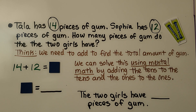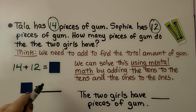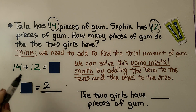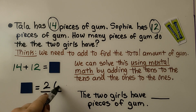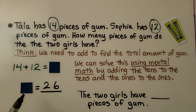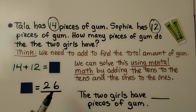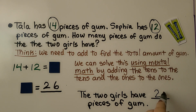We can solve this using mental math by adding the tens to the tens and the ones to the ones. We have one 10 and one 10 — that's two tens. We have four ones and two ones — that's six ones. That means our box is equal to 26. That's the sum, and the two girls have 26 pieces of gum together.